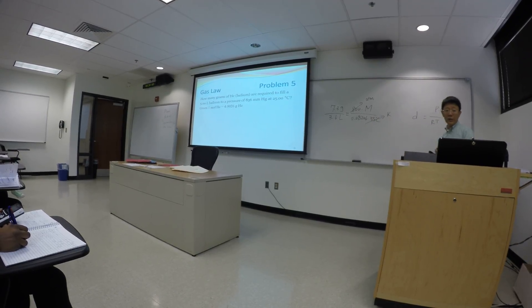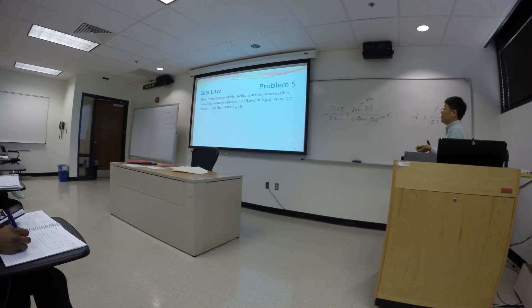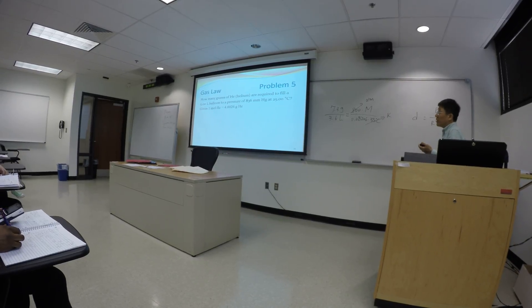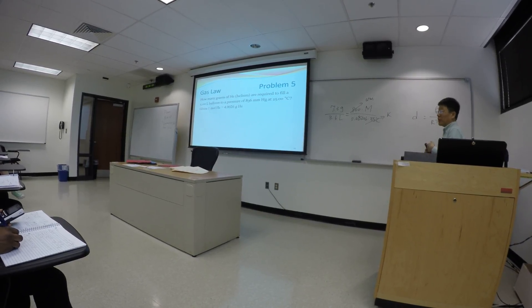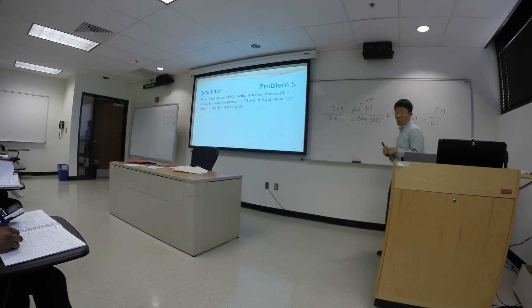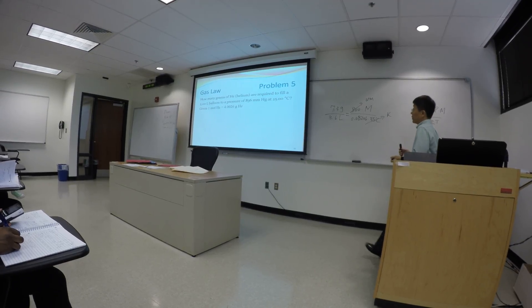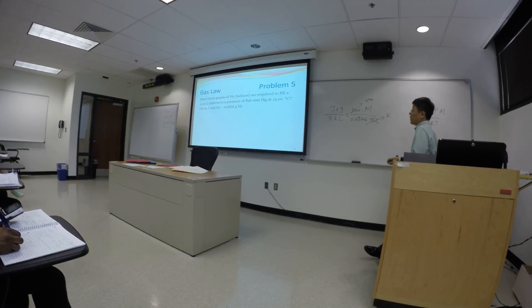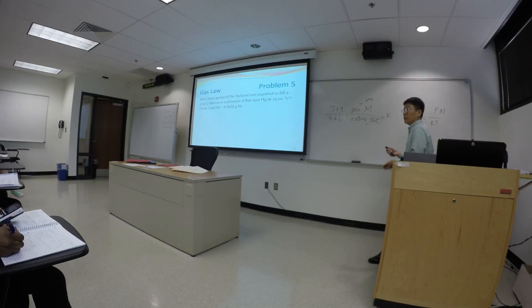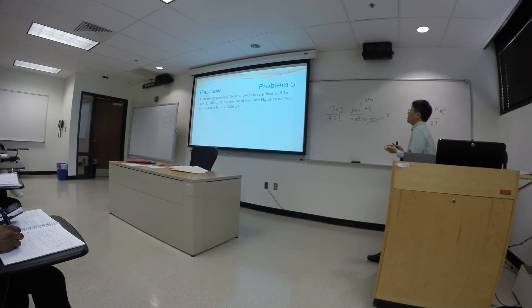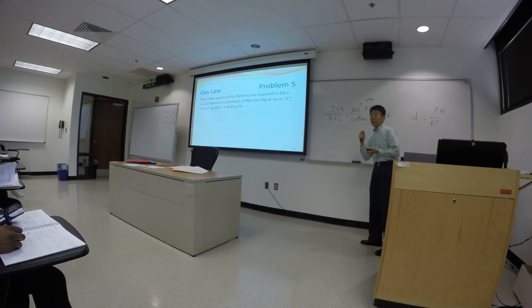if you try to inflate the balloon with helium, and the volume of the balloon is 5 liter, pressure 836, a little bit over 1 atm, 836 millimeter mercury, 25 degrees Celsius. How many grams of helium do we need in order to inflate that balloon to this particular specification?